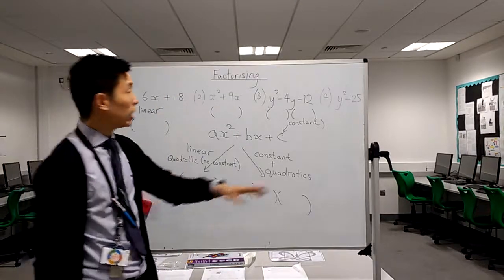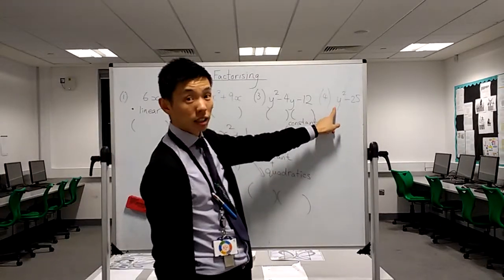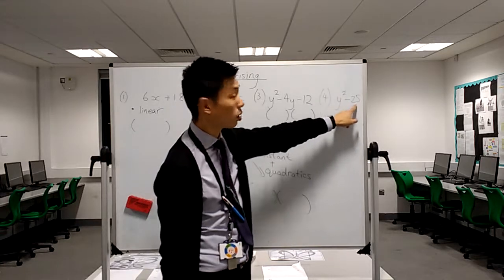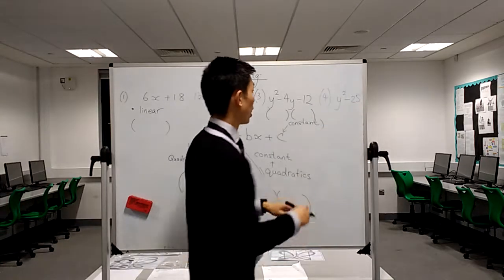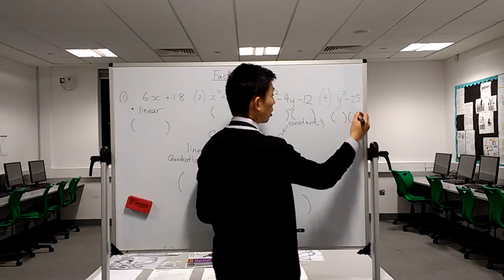And finally, it's quadratic—to the power of 2. Has it got a constant? Yes, it does. So, it's again a double bracket.